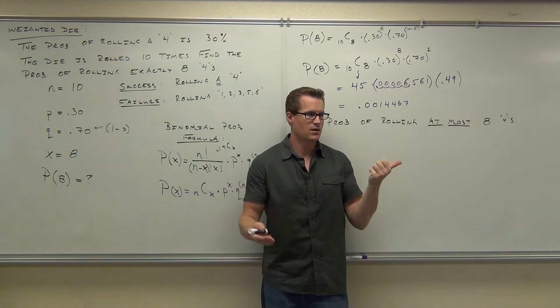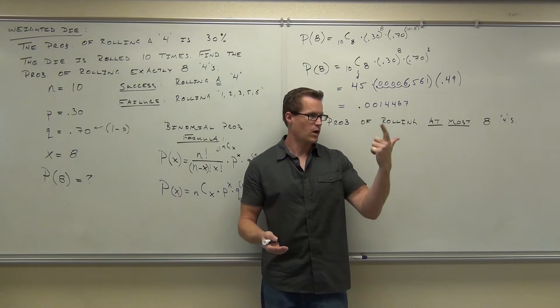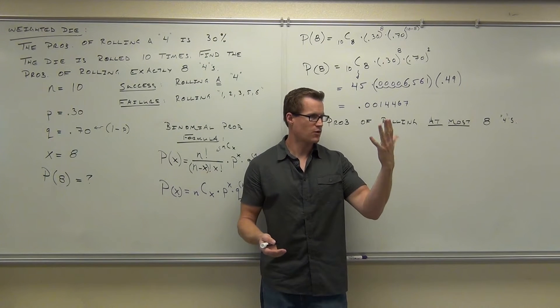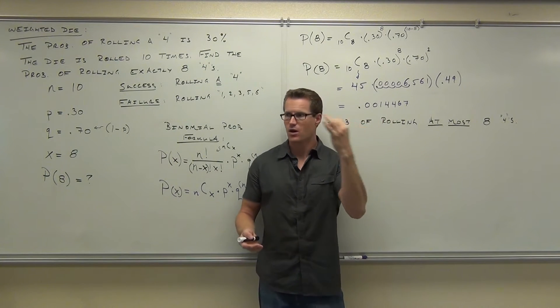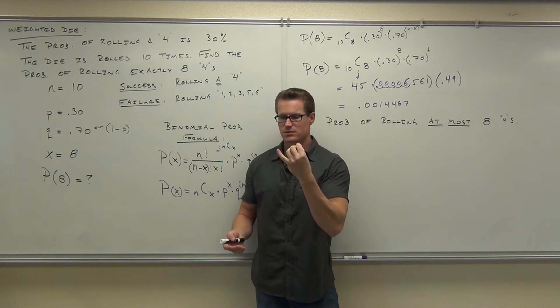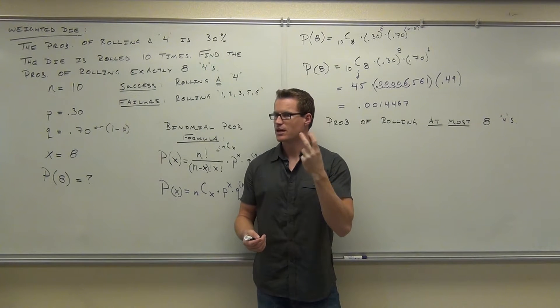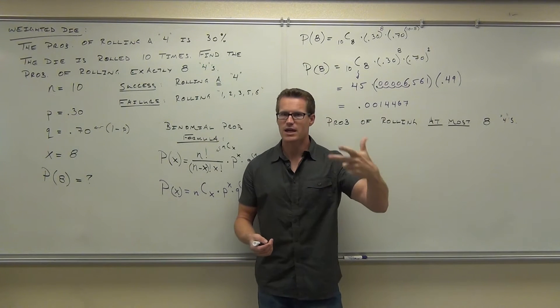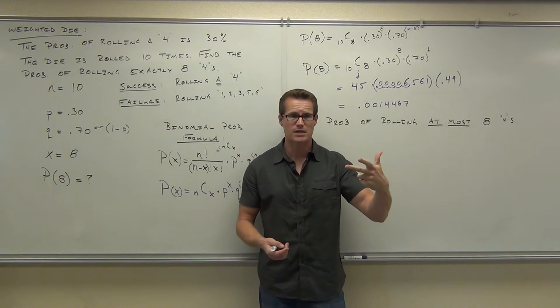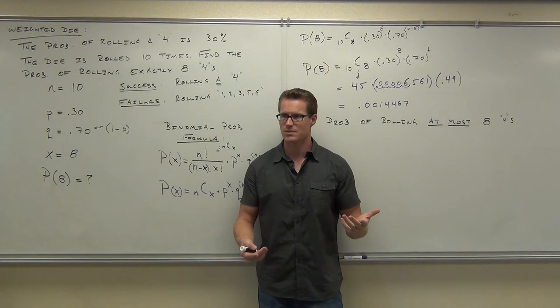That's at most — it's not even anything. $1, $2, $3, $4, $5, $6, $7, or you could have $8. You could get up to $8, including $8, and that would satisfy 'at most.' Does that make sense?